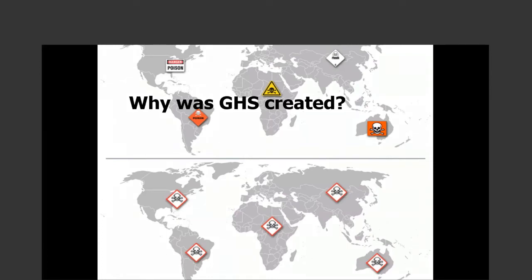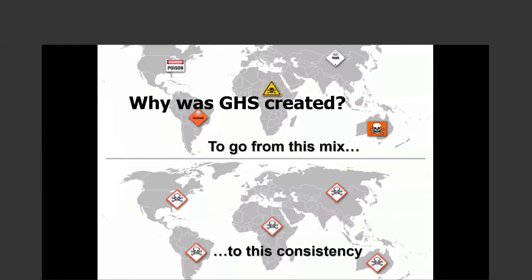This graphic shows why the GHS was created. The symbols at the top show how a hazardous, poisonous, or toxic chemical could have been labeled throughout the world prior to the GHS — manufacturers would put whatever type of label or symbol they wanted on those containers, drums, or boxes. At the bottom, with the new GHS, they've gone to a consistency so that no matter where a chemical is manufactured — whether in India and shipped to Spain, Russia, or Japan — it's going to have the appropriate labels. It will have one label in English and one label in the appropriate language for wherever that chemical is being shipped.